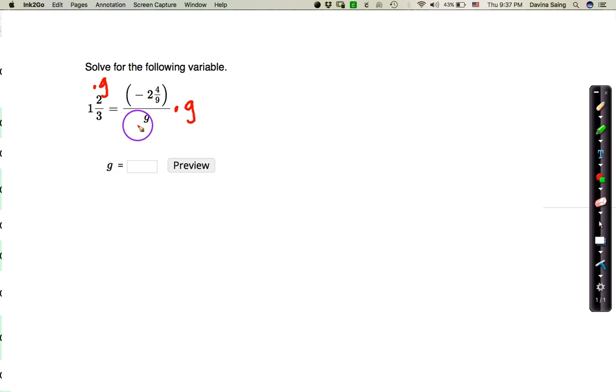Now, by doing this, you're going to notice that the g's are going to cross-reduce. We're going to go away. So this is going to leave me with 1 and 2 thirds g equals negative 2 and 4 ninths.